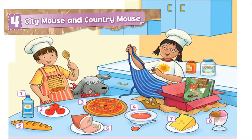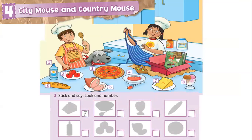Vamos a ir utilizando estas comidas y realizar algunas oraciones en base a ellas. First activity: you are going to tell me the correct number according to the dark shadows in the pictures. Ustedes me van a ir diciendo el número que corresponde en base a las sombras. For example, the first one — number seven is the correct number. Ahora vamos a ver la segunda comida.